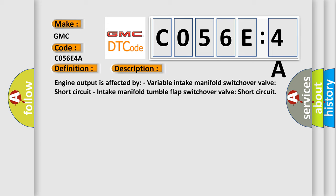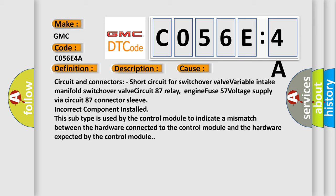This diagnostic error occurs most often in these cases: circuit and connectors, short circuit for switchover valve, variable intake manifold switchover valve, circuit 87 relay, engine fuse 57 voltage supply via circuit 87 connector sleeve, incorrect component installed. This subtype is used by the control module to indicate a mismatch between the hardware connected to the control module and the hardware expected by the control module.